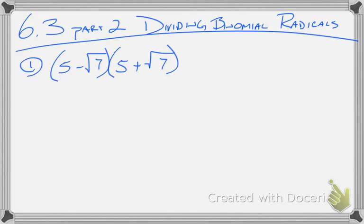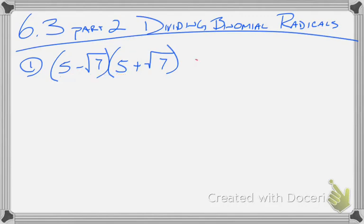Notice in this multiplication, the first two terms are the same, the second two terms are the same. The only difference is the sign in the middle — one's plus and one's minus — and those are called conjugates.